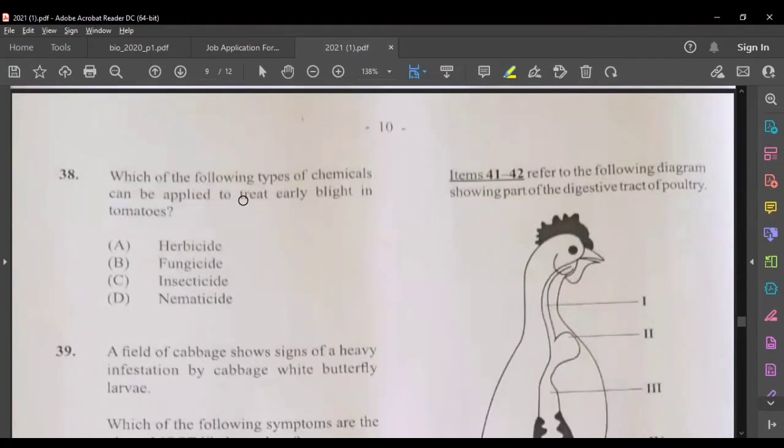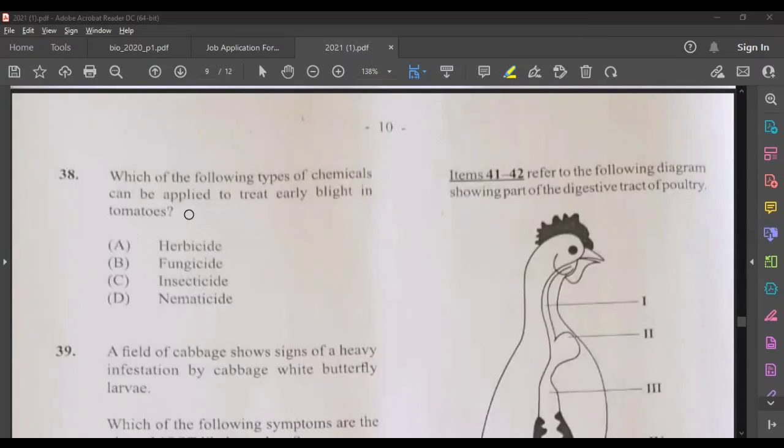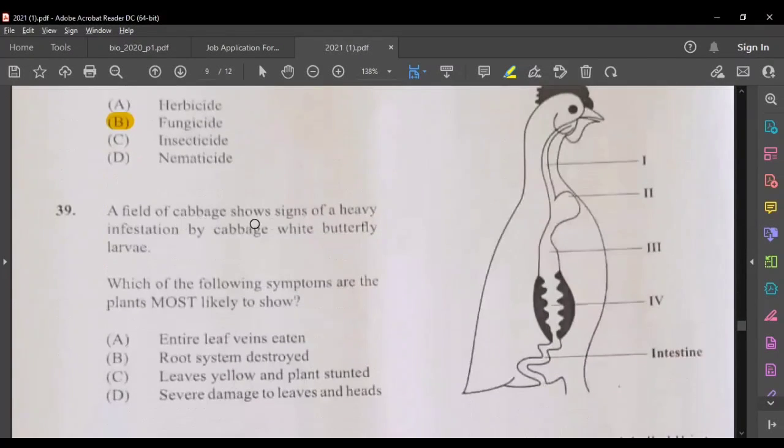Question 38, which of the following types of chemicals can be applied to treat early blight in tomatoes? Well, early blight is caused by a fungus and to treat this disease you will need a fungicide. A field of cabbage shows signs of heavy infestation by cabbage white butterfly larvae. If it is a larvae, most likely they will be feeding and damaging the leaves. So D would be the most appropriate answer, severe damage to leaves and heads.